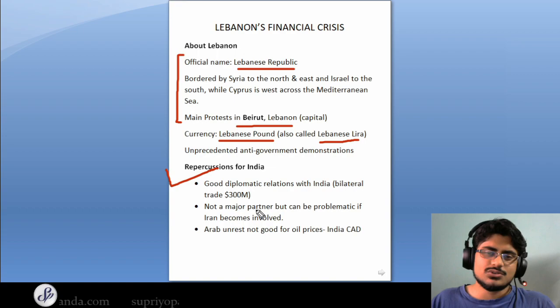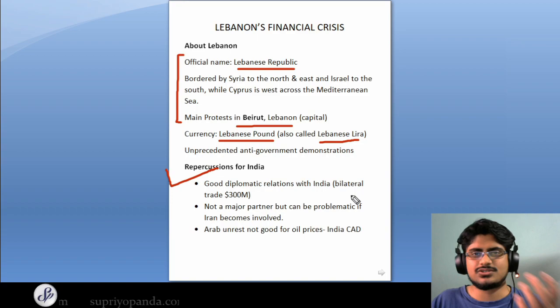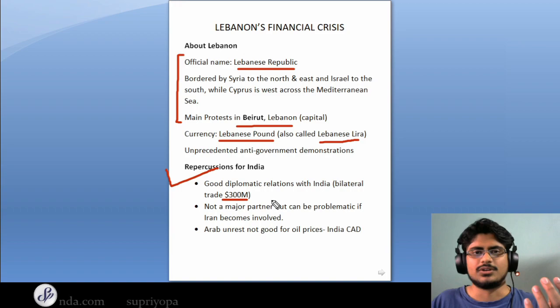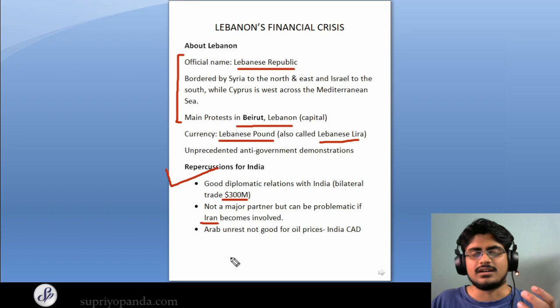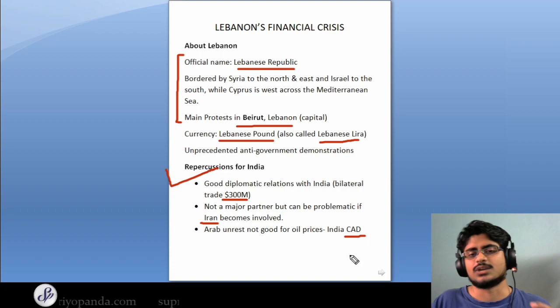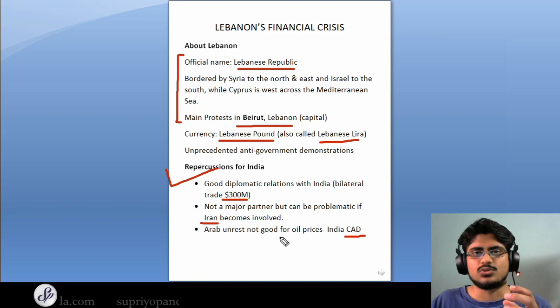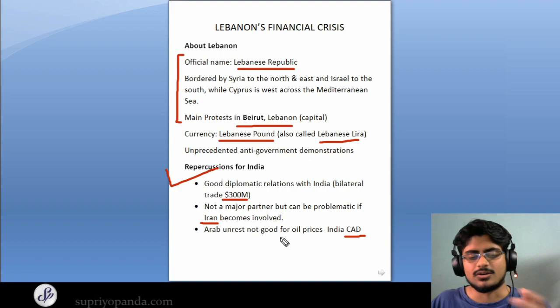What are the repercussions for India in this scenario? We need to know about the diplomatic relations between India and Lebanon. The bilateral trade stands at about $300 million US dollars, and most of it — about $280 million — is Indian exports; we import very little from Lebanon. It's not a major partner, but it can be problematic if Iran becomes involved. Arab unrest is never good for India because of the high current account deficit we have — it's not good for oil prices.